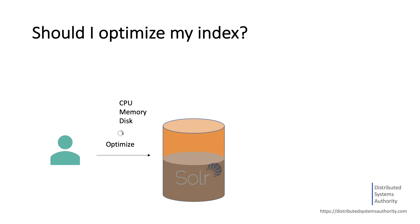We strongly advise that you don't do this operation at all without seriously considering the consequences. A horrible anti-pattern is to do this operation from a client program on each commit. In fact, we discourage even issuing basic commits from a client program. If you test it thoroughly, rather than assuming that optimize or force merge is beneficial, you could eventually run them periodically from a cron job during off hours.